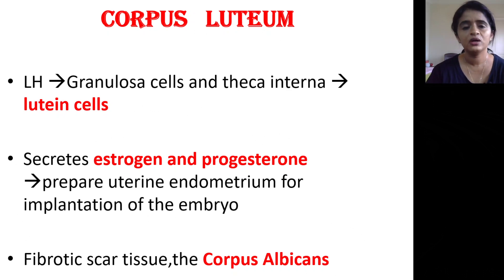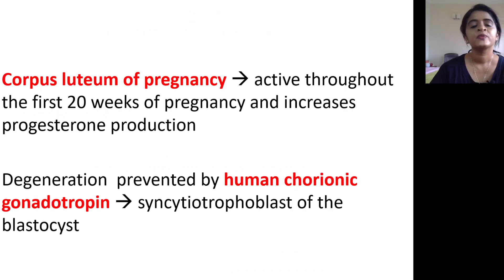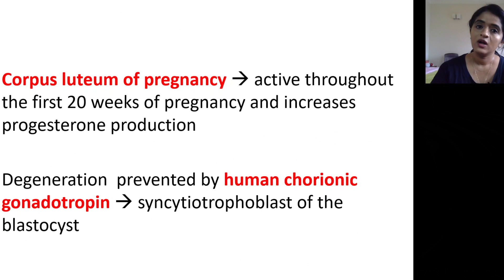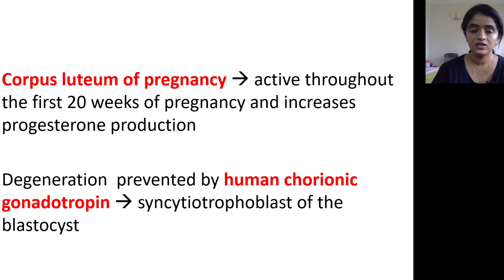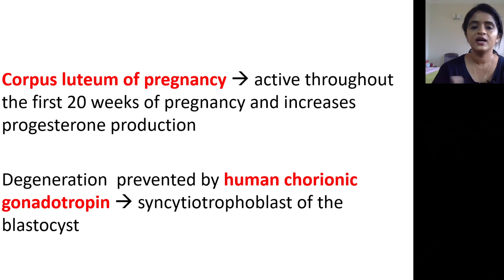If there is no fertilization, the corpus luteum undergoes fibrotic change, resulting in corpus albicans, and there will be withdrawal bleeding and menstruation. If pregnancy occurs, the corpus luteum continues until about 20 weeks of pregnancy, continuing to secrete progesterone needed for maintenance of pregnancy — this is called corpus luteum of pregnancy. Corpus luteum of menstruation lasts roughly 14 days before degenerating into corpus albicans. This degeneration is prevented by human chorionic gonadotropin (hCG), secreted by the syncytiotrophoblast of the blastocyst.